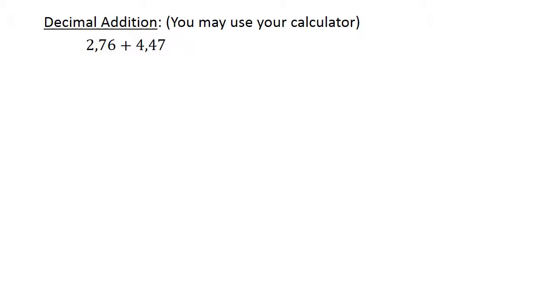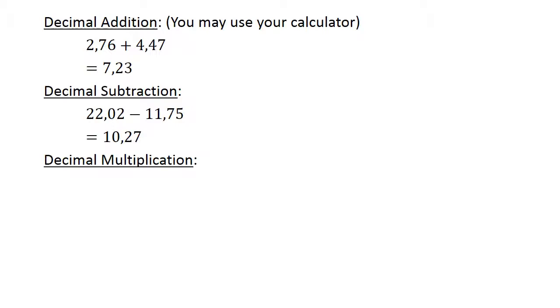Decimal addition. You may use your calculator to check all answers. 2.76 plus 4.47 equals 7.23. Decimal subtraction. 22.02 minus 11.75 equals 10.27. Decimal multiplication. 0.69 times 0.17 equals 0.1173.